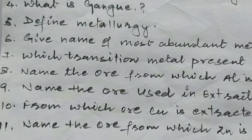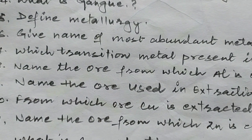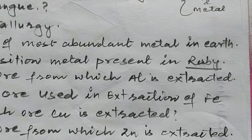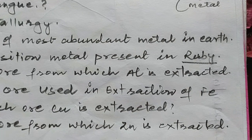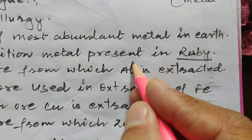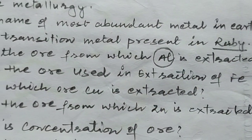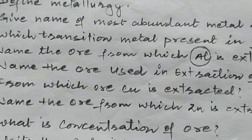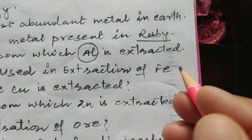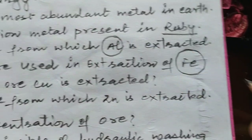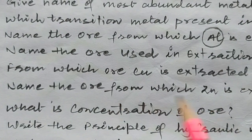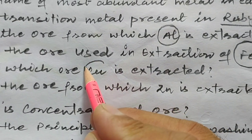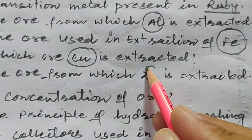Question number 8: name the ore from which aluminum is extracted. The next question: name the ore used for the extraction of iron. After that: from which ore is copper extracted? And then: from which ore is zinc extracted?